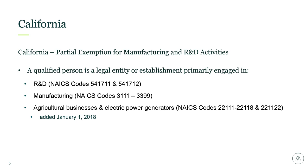For manufacturing, the NAICS codes are 3111 through 3399. When we're talking about manufacturing, we're talking about a process that begins when raw materials enter the manufacturing process and ends at the final stage when tangible personal property has been altered to its completed form, which can include packaging. Agricultural businesses and electric power generators fall under NAICS codes 22111, 22118, and 2211-22, with the power generation addition effective January 1st, 2018.